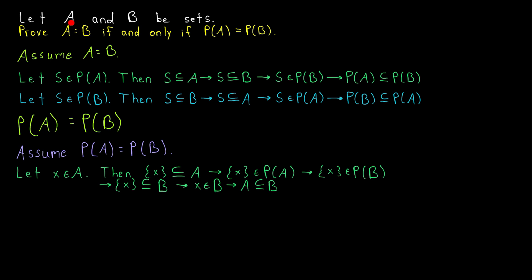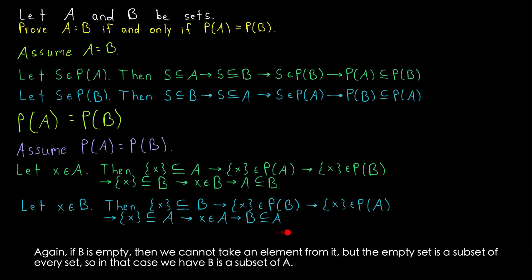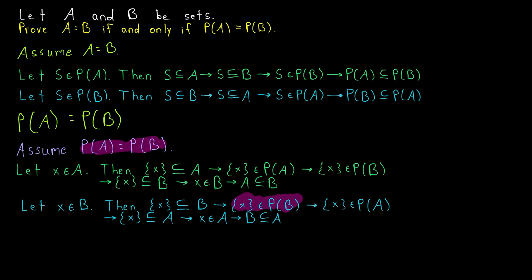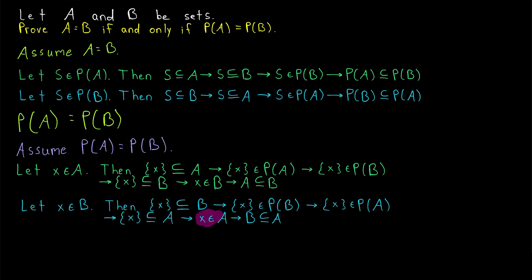Again, because we have not distinguished A and B in any way except by their names, we can apply this same logic to prove that B is a subset of A. It's just the A's and B's swapped. We take an element X from B; the set {X} is a subset of B, so by definition of power set it's an element of the power set of B. Since the power set of B equals the power set of A, {X} is an element of the power set of A, so {X} is a subset of A, and by definition of subset X is an element of A. So indeed, B is a subset of A.